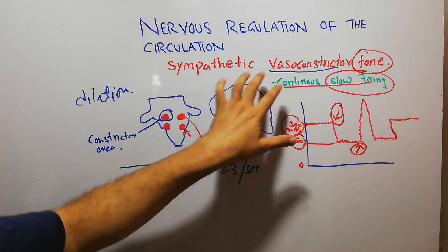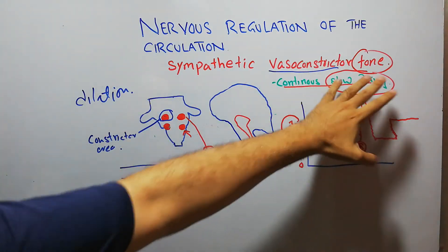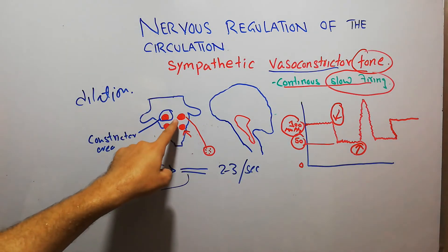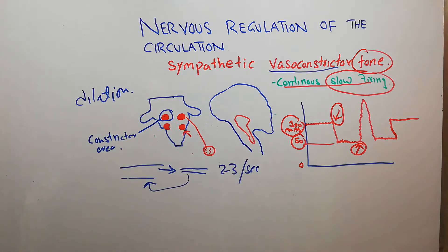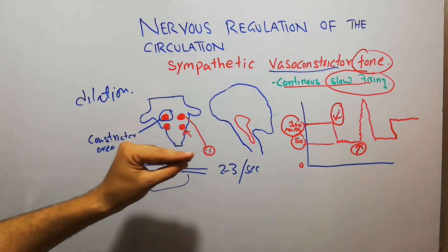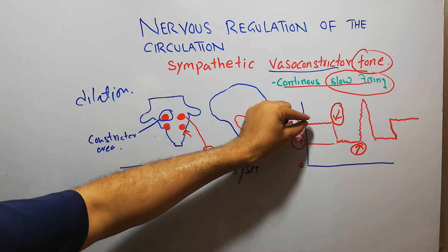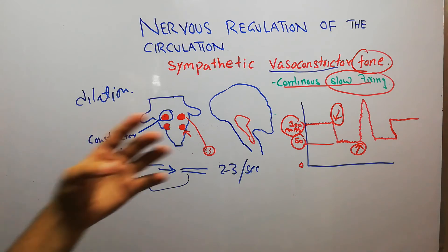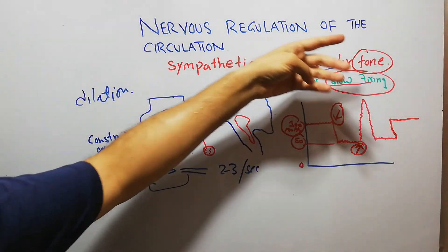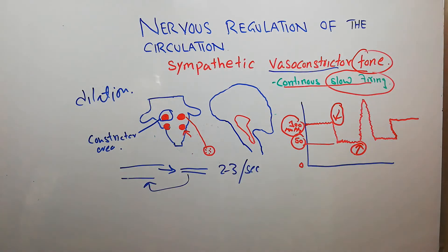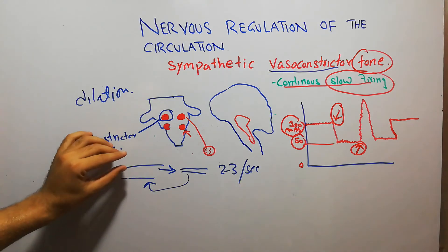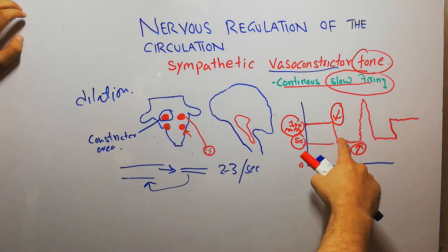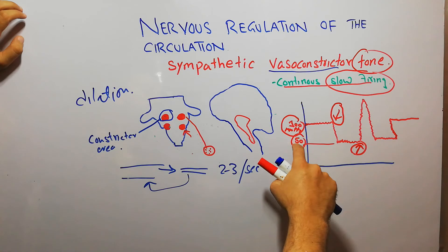The sympathetic vasoconstrictor tone is the continuous slow firing of 2–3 impulses per second from the vasoconstrictor area of the vasomotor center in the brain. It helps maintain slight constriction in blood vessels and keeps the mean arterial pressure at a specific level. If this tone is eliminated by anesthetic, the mean arterial pressure falls from 100 to 50 mmHg.